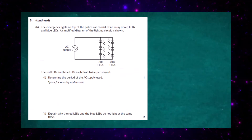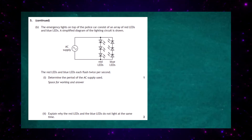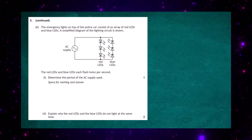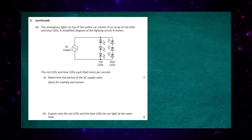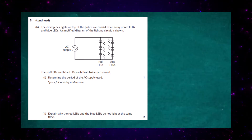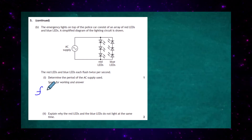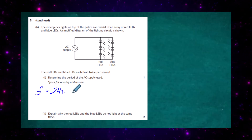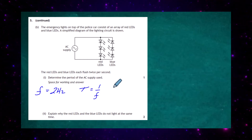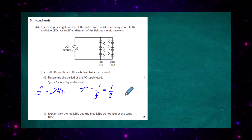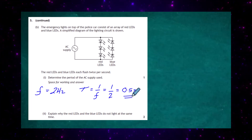Question 5 continued, Part b: the emergency lights on top of the police car consist of an array of red LEDs and blue LEDs. There is a simplified diagram of the lighting circuit. The red LEDs and blue LEDs each flash twice per second. For one mark, we have to determine the period of the AC supply. Two flashes per second means two cycles per second, so the frequency equals 2 hertz. The period T equals one divided by the frequency, so T equals one divided by two, which is 0.5 seconds.